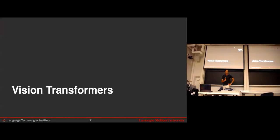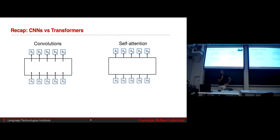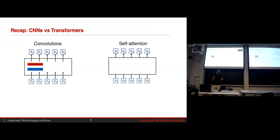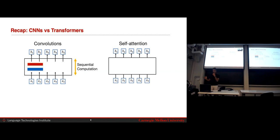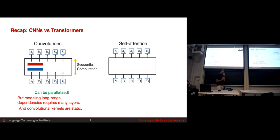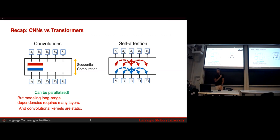Let's start talking about vision transformers. Before that, let's compare CNNs versus transformers. CNNs use convolutional filters, they're sequential with successive computation, and have a local window — so to get large range dependencies you require a lot of layers. The most important thing to concentrate on is that the convolutional layers are static.